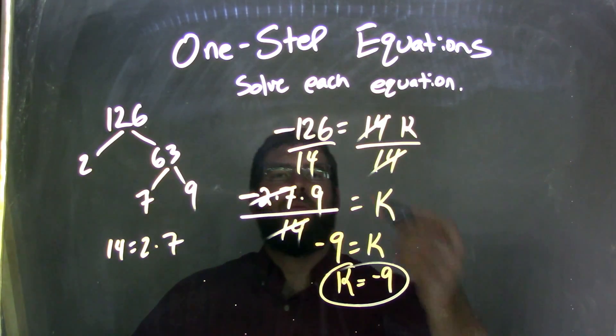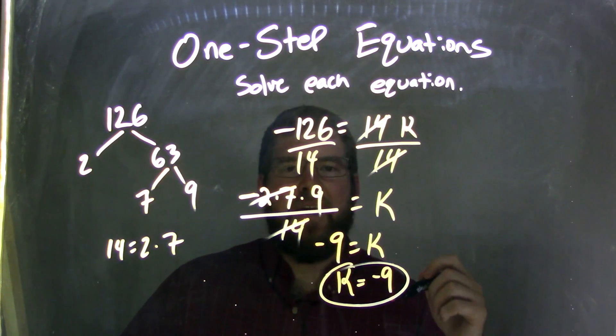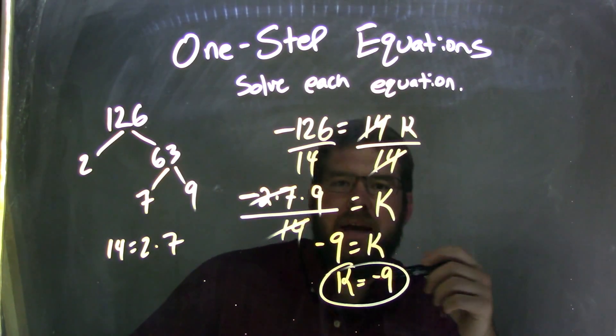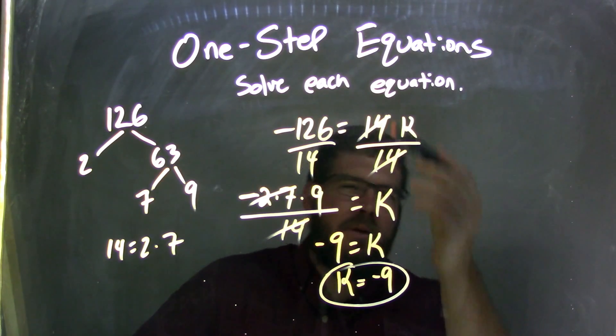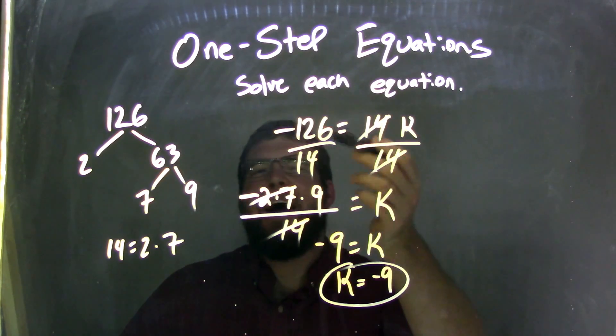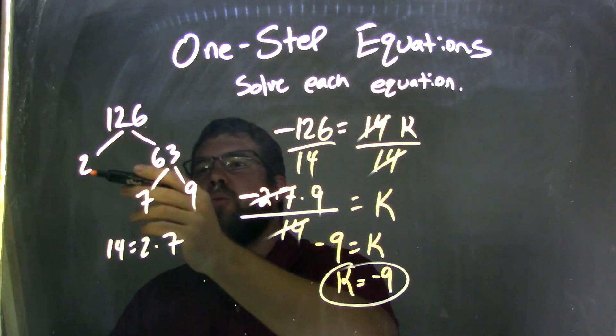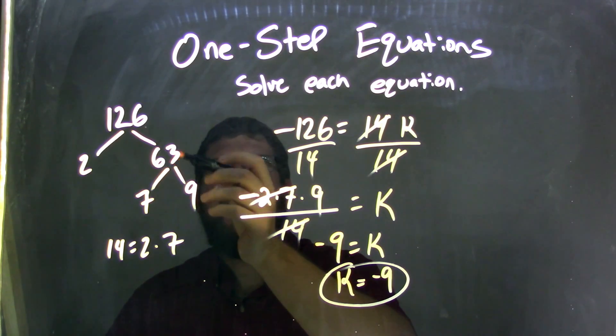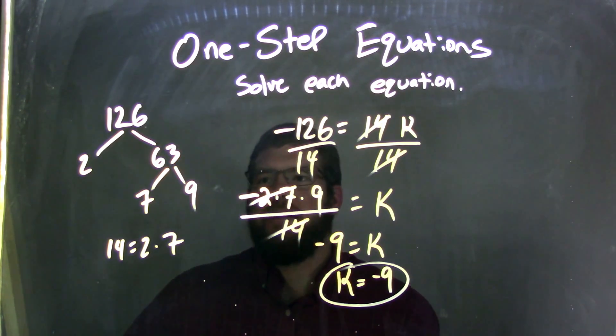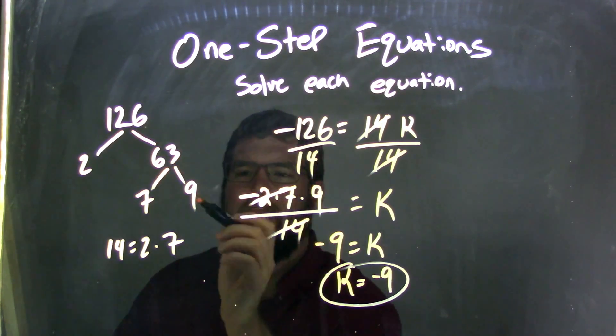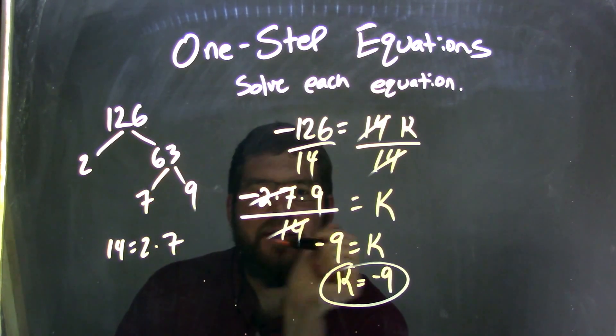So, let's recap. We started with negative 126 equals 14. I divided by 14 both sides because it's the opposite of multiplication. I then said, the 14 is canceled. It just got K by itself. How can I break down 126? Well, I know 2 went into it 63 times. And then 63 was 7 times 9. And so, now that's set. I could keep breaking it down at that point, but I realized that 2 times 7 was 14.